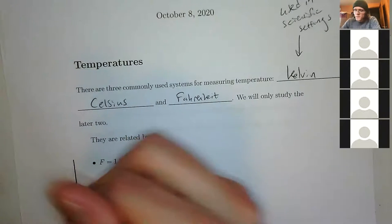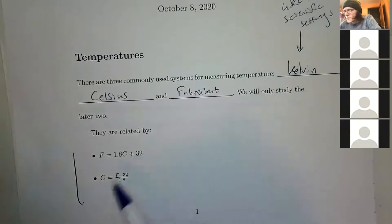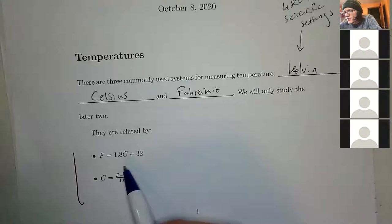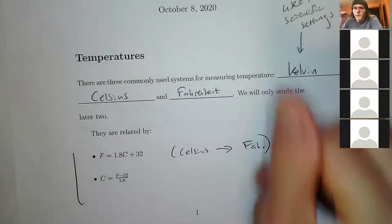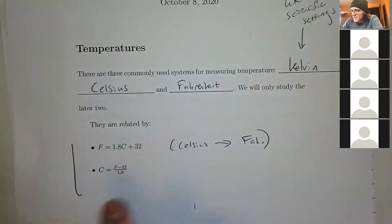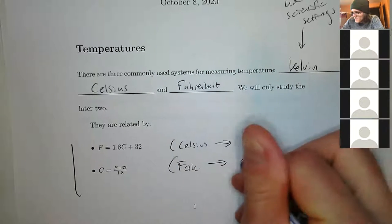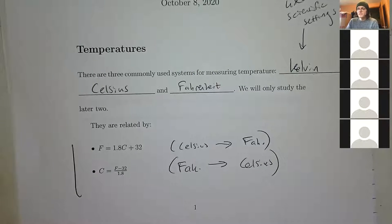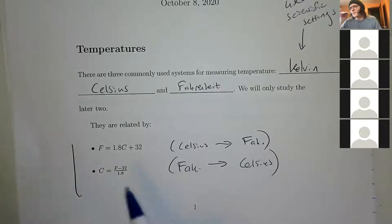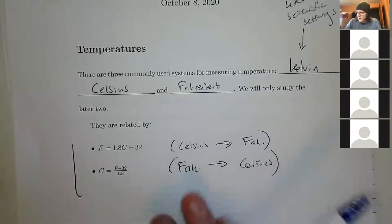These are our relationships between Fahrenheit and Celsius. To go from Celsius to Fahrenheit, use the first formula. To go from Fahrenheit to Celsius, use the second. These conversions are a little different — we're not using conversion factors; we're using equations. You just plug in your temperature and compute.